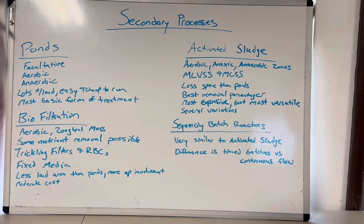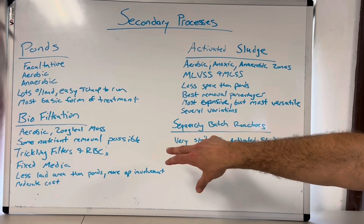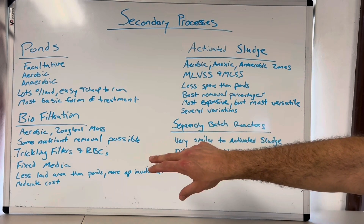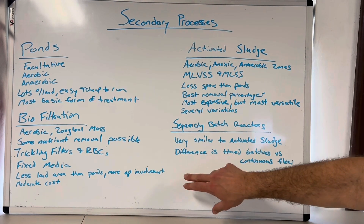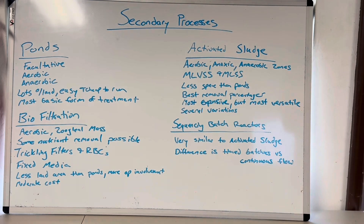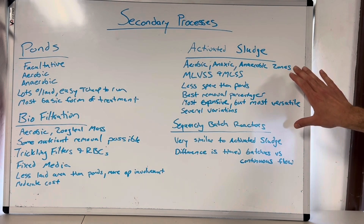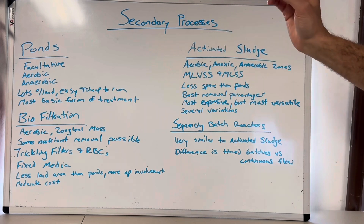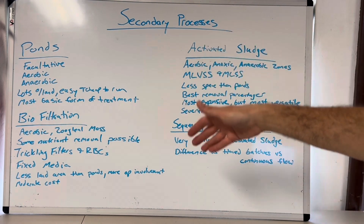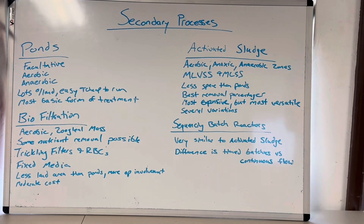Back to the 30,000-foot view: trickling filters and RBCs use fixed media, requiring less land area than ponds but more operator involvement. You have to pay closer attention to organic and hydraulic loading rates, because when these plants get upset they can lash out very fast — though in my experience they're easier to rein back in than a pond. The cost is moderate: no blower costs like activated sludge, but more mechanical costs, more operators, and more pumps than a pond system.